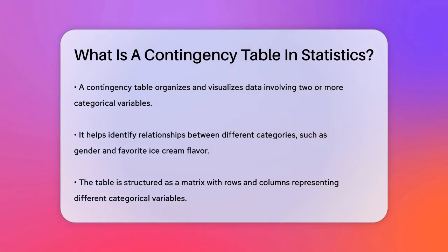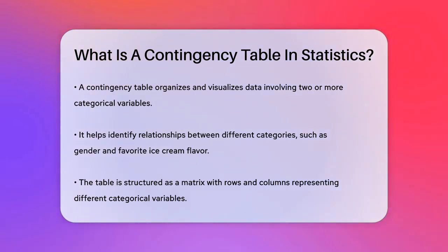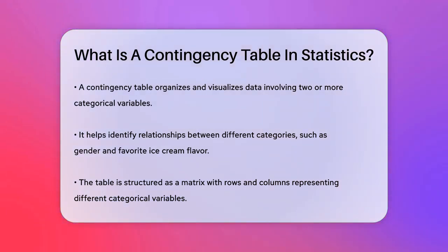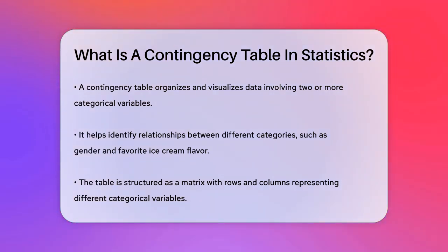A contingency table is essentially a way to organize and visualize data when you have two or more categorical variables. Imagine you're conducting a survey to see how people's favorite ice cream flavors differ between boys and girls. A contingency table would help you see these relationships clearly.